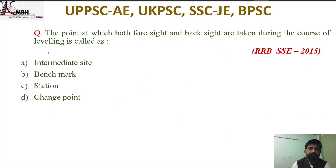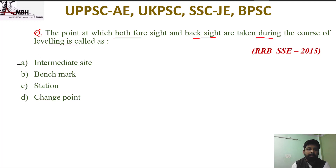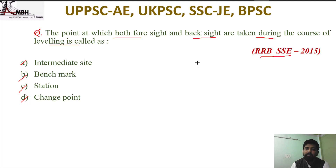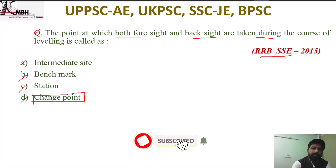Next question: the point at which both foresight and backsight are taken during the course of leveling is called — intermediate sight, benchmark, station, or change point? At a change point, both foresight and backsight are taken. Therefore option D, change point, is correct.